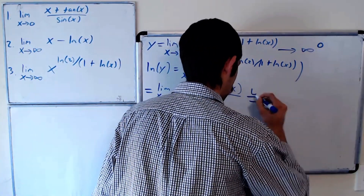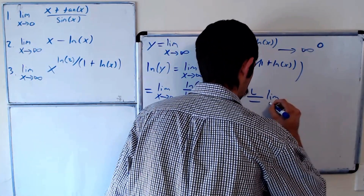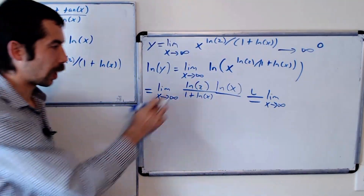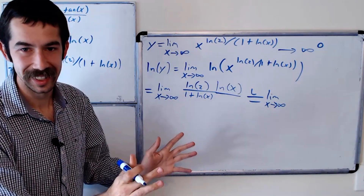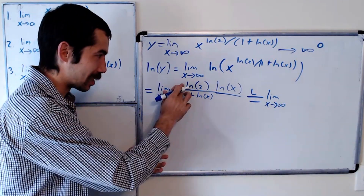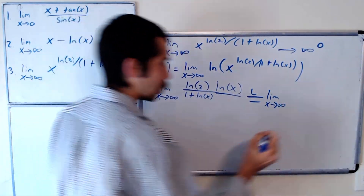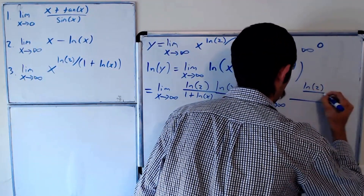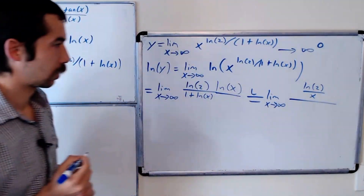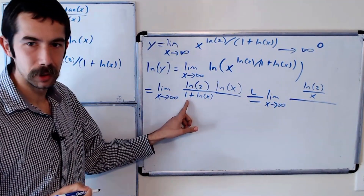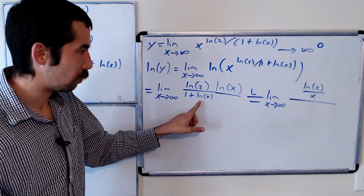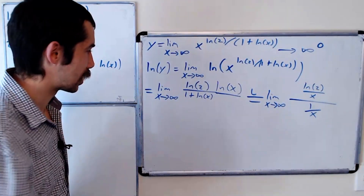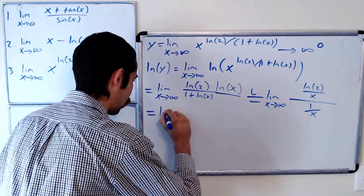By L'Hopital's rule, this is the limit as x goes to infinity of the derivative of the top over the derivative of the bottom. ln of 2 is just a constant, so it's a scalar times ln of x, making the derivative of the top ln of 2 over x. The derivative of the bottom: derivative of 1 is 0, and derivative of ln of x is 1 over x. So the 1 over x terms cancel, and we get ln of 2.